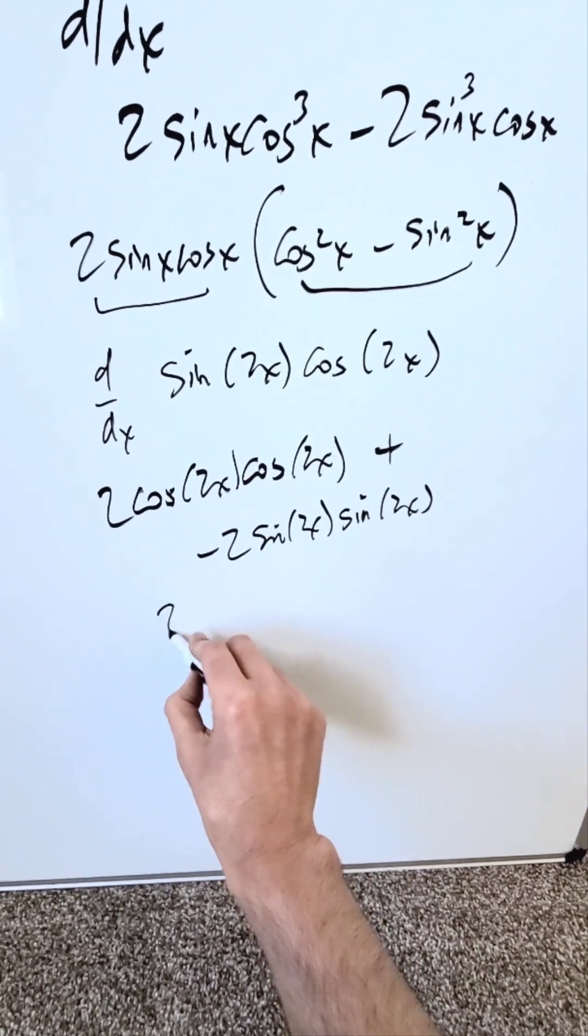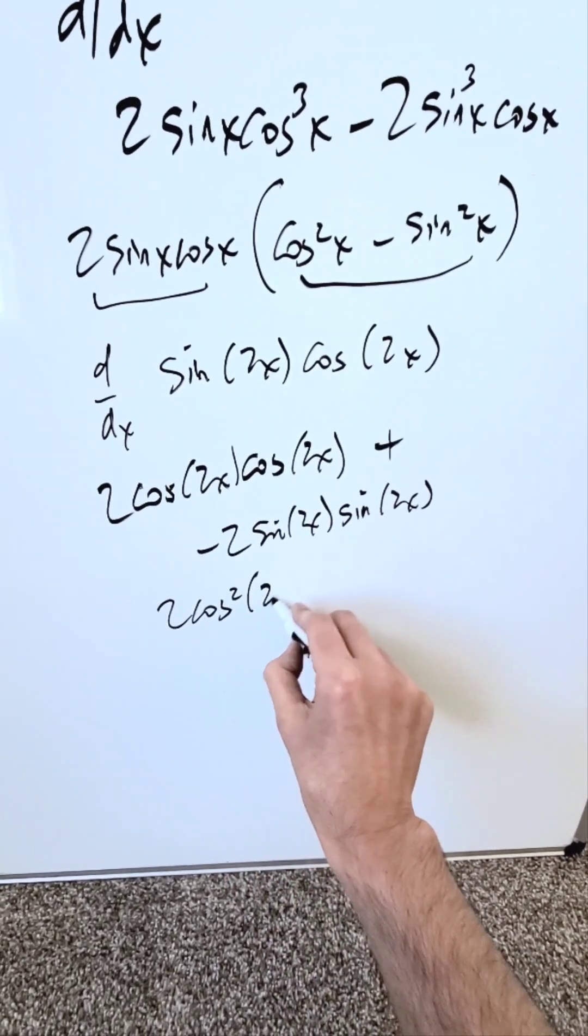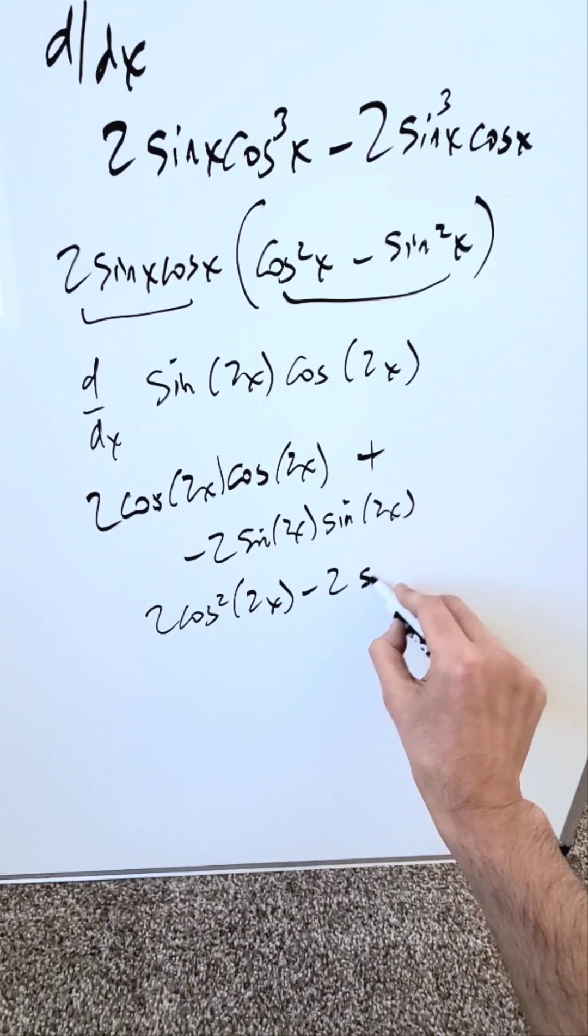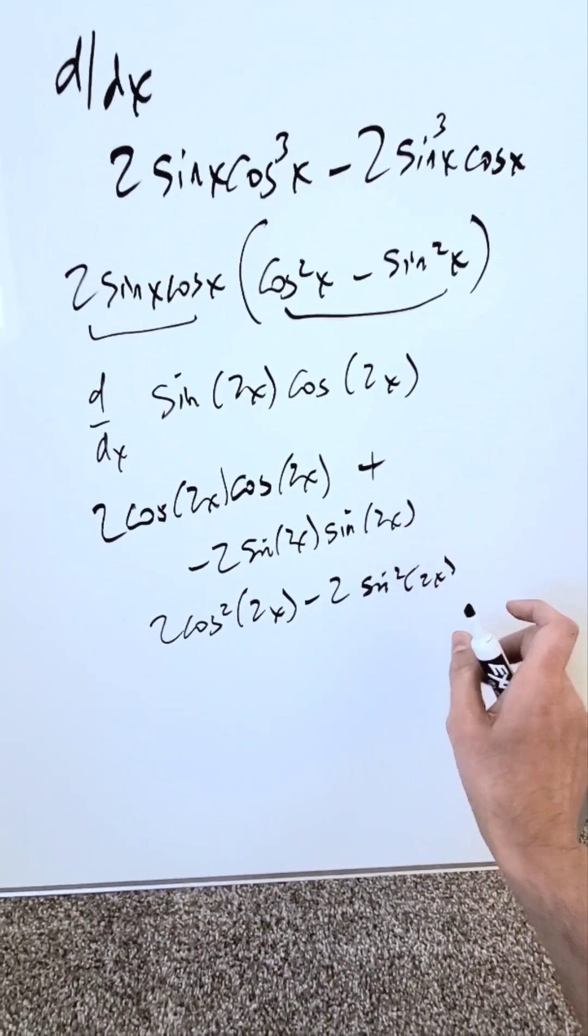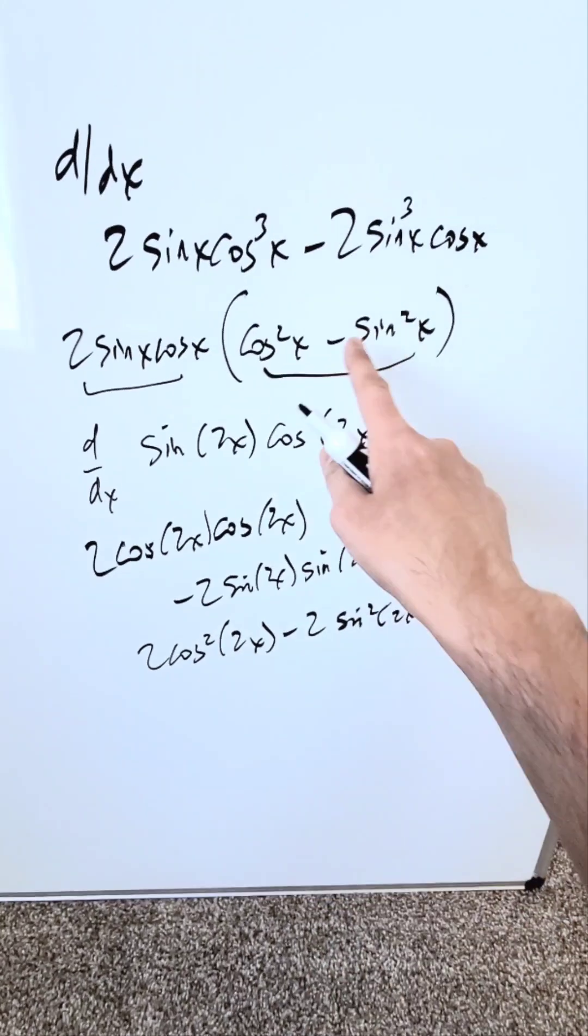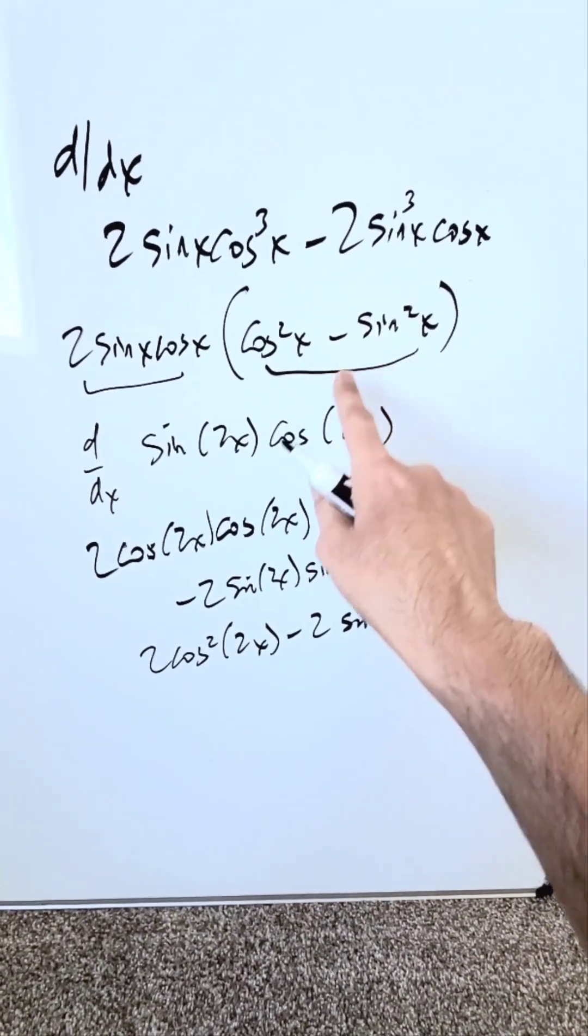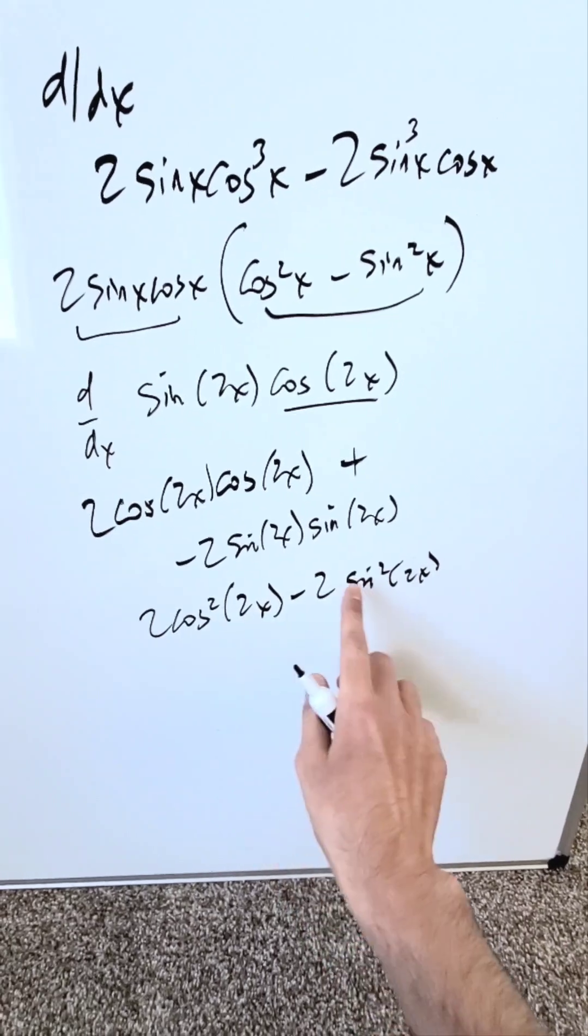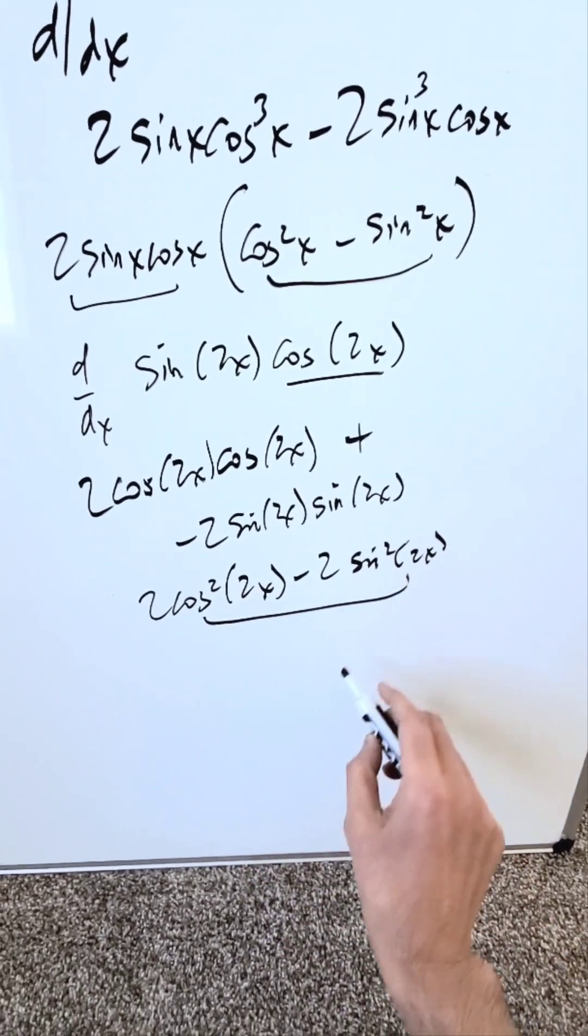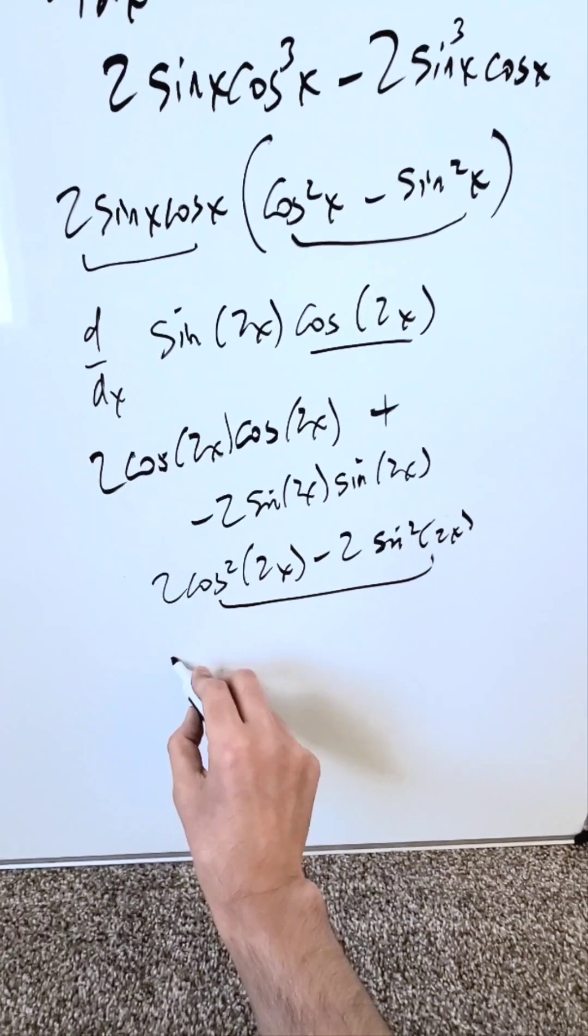you end up seeing you have 2 times cos²(2x) minus 2 times sin²(2x). And look, you can do a substitution here in terms of an identity. If you look right here, cos²(x) - sin²(x) is equal to cos(2x). What's the difference if I have a cos²(2x) and a sin²(2x)? For this item, you can bring an identity. If you were to isolate the two, you can.